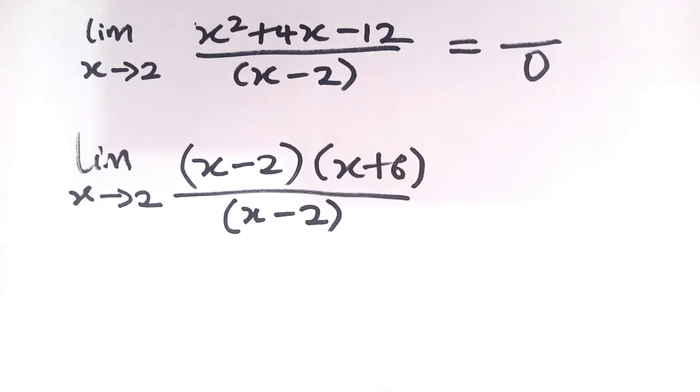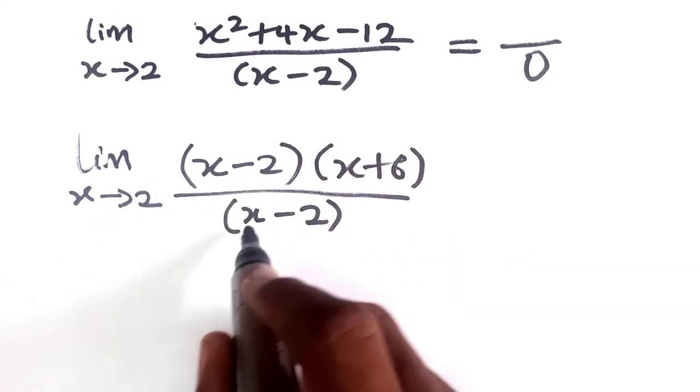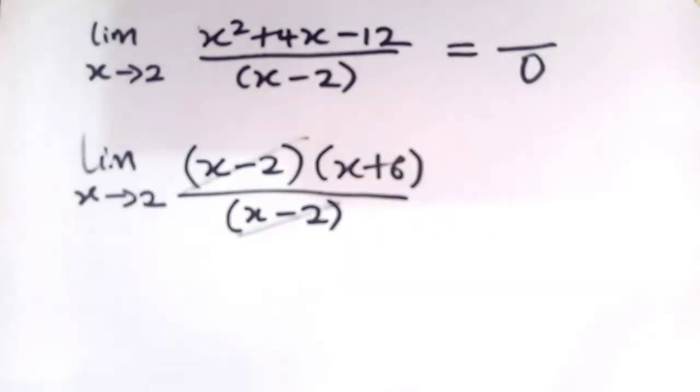Now we have factorized the numerator. We have x minus 2 and x minus 2, which means they can cancel out. So we have them cancel out.